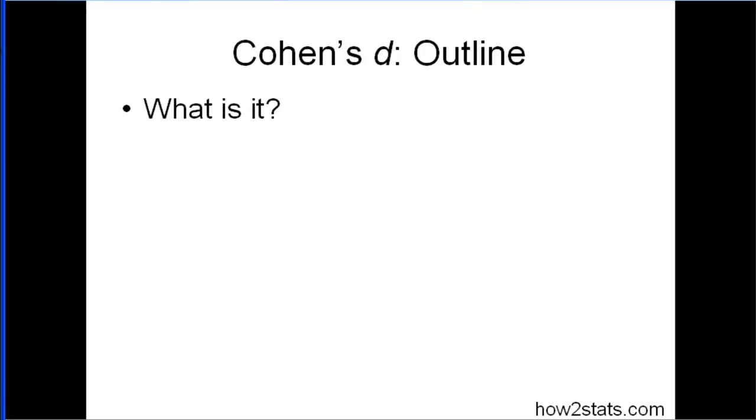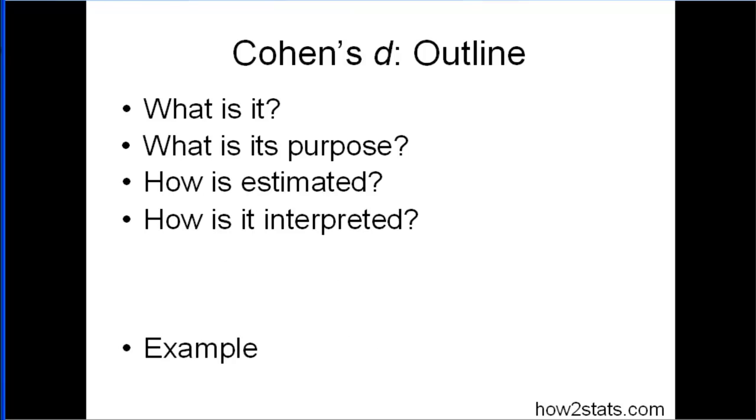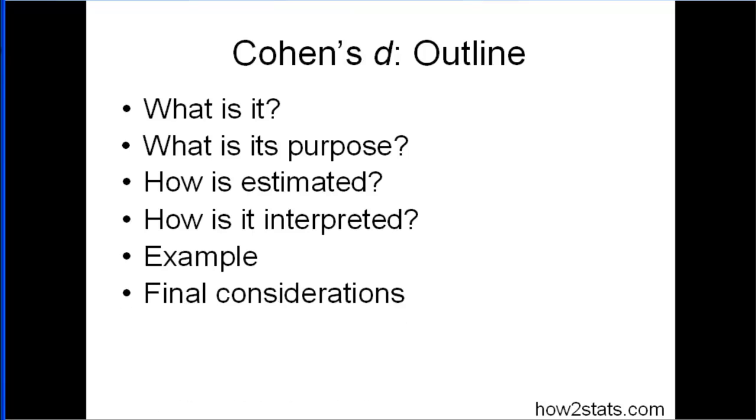So here's the outline of the presentation. Cohen's D, what is it? What is its purpose? How is it estimated? How is it interpreted? I'll go through an example, and some final considerations.